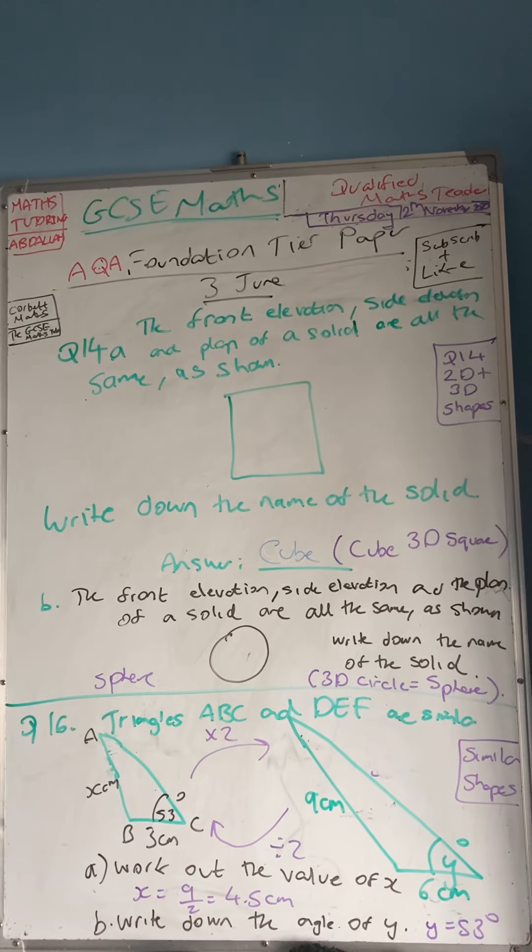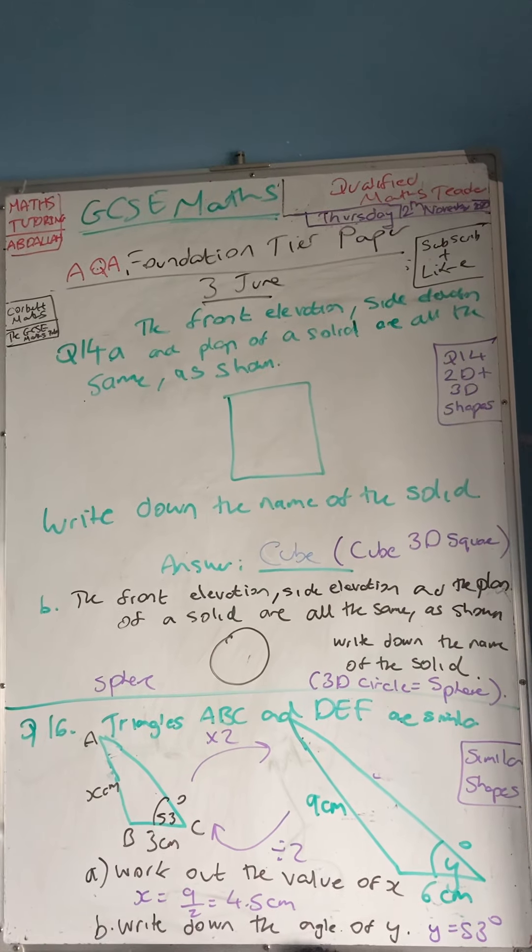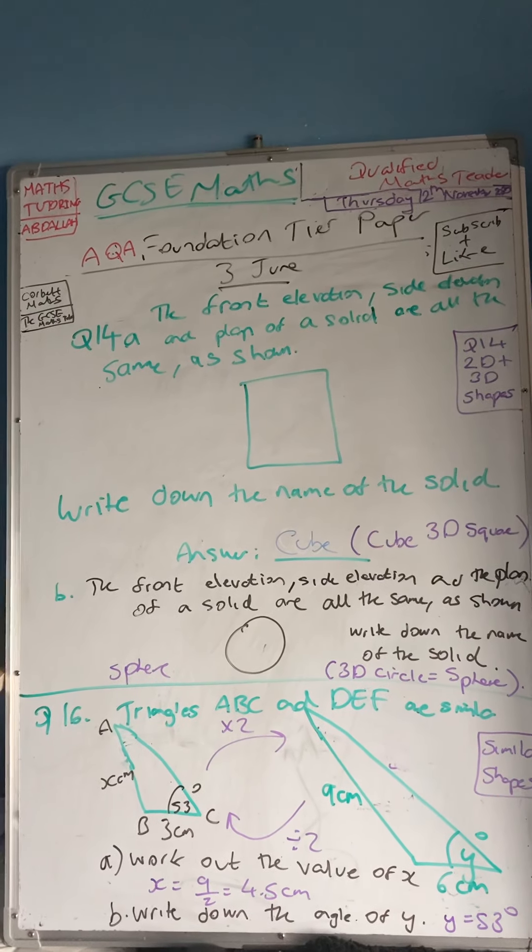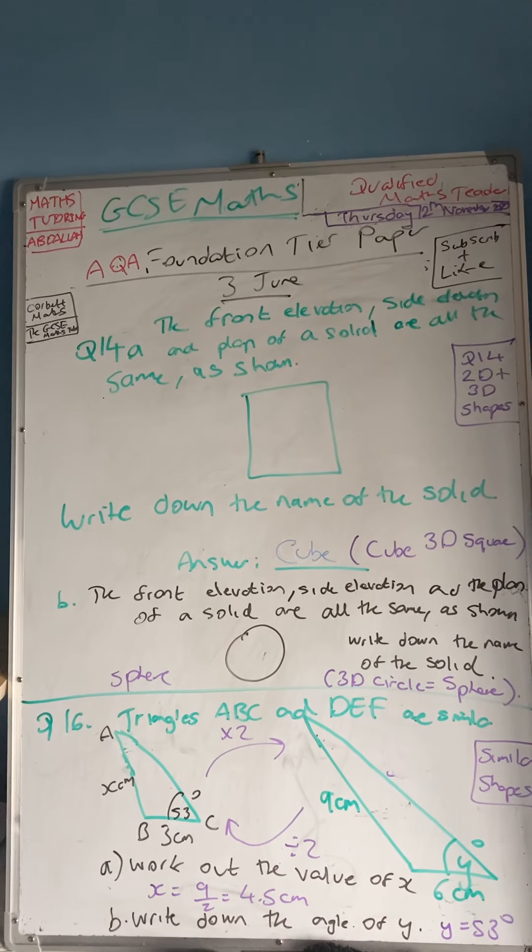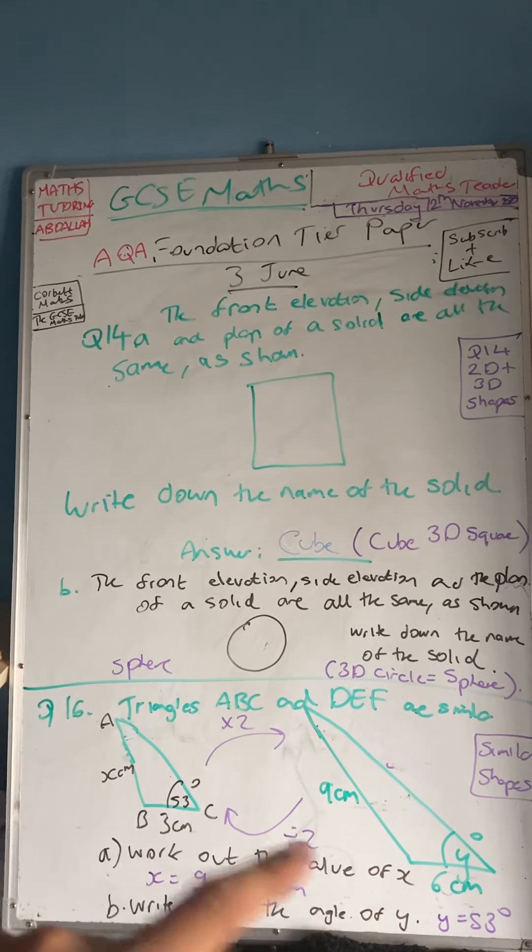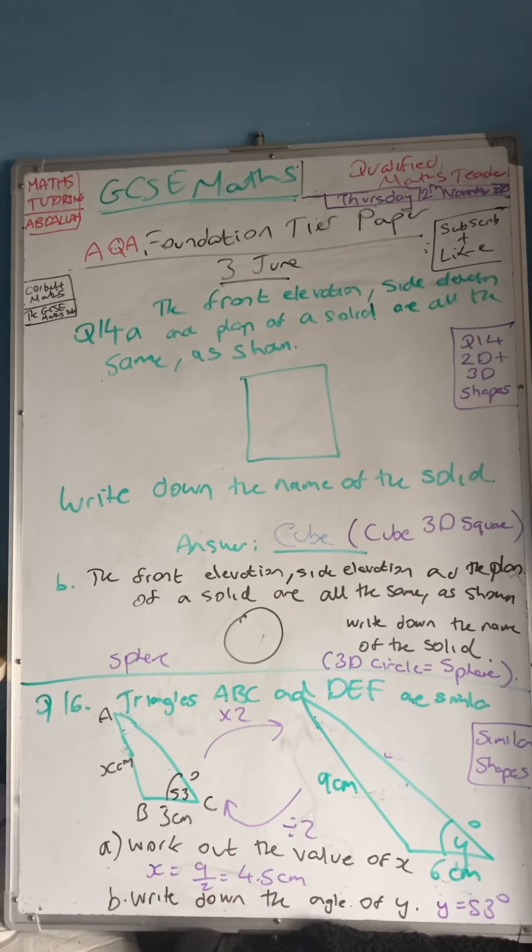Work out the angle of angle y. Angle y is going to be 53 degrees. Because the rule here is that angles don't change. Regardless of whether it is enlarged or becomes smaller, my angles do not change.